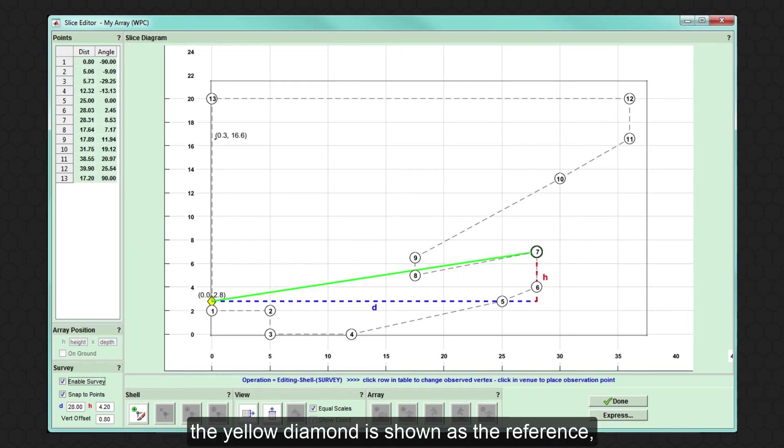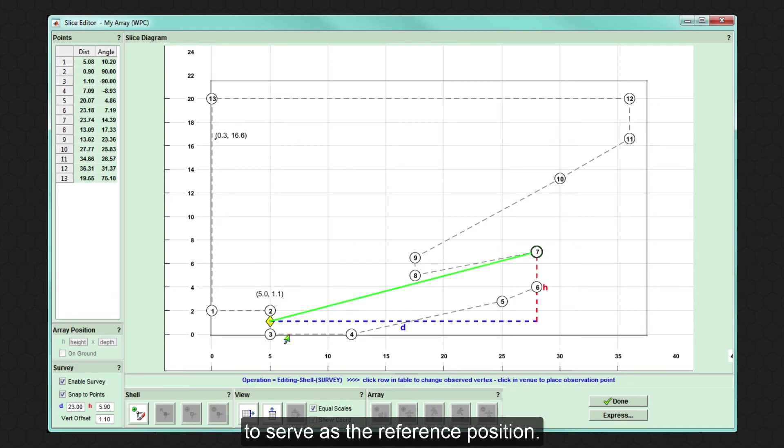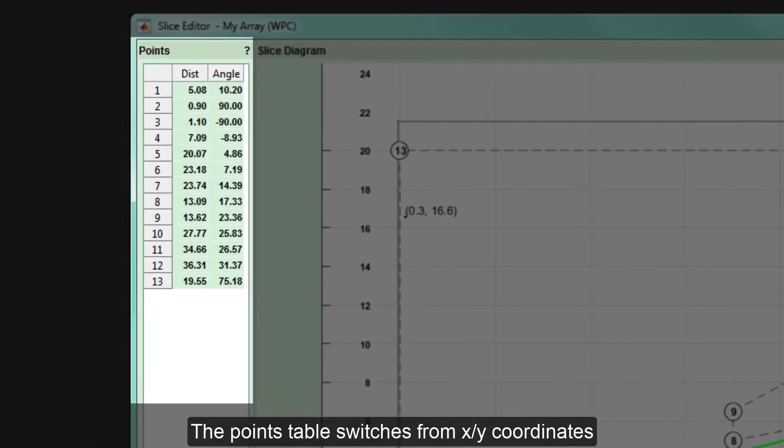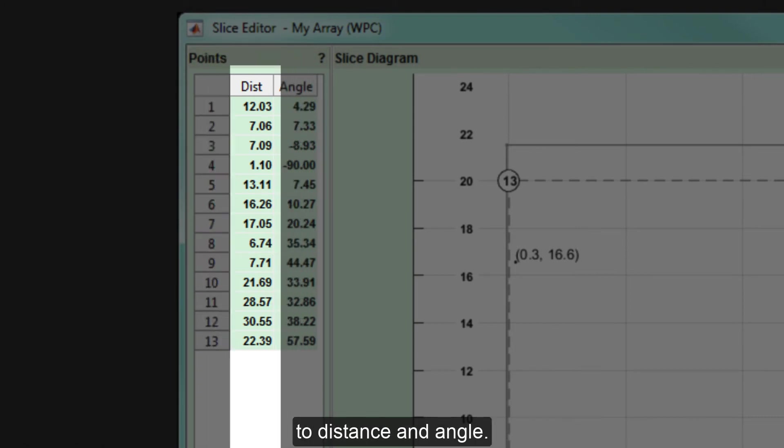In the system diagram, the yellow diamond is shown as the reference and can be vertically offset from the vertex it is snapped to if required, if your measurement device is mounted on a stand for example. You can click on any position around the slice to serve as the reference position. The points table switches from XY coordinates to distance and angle.